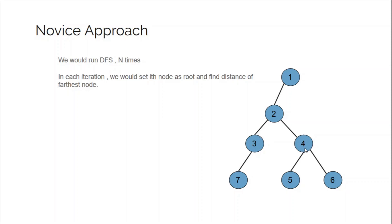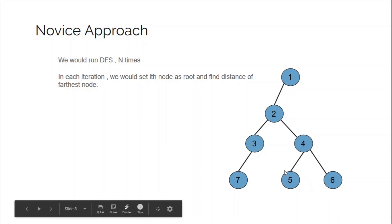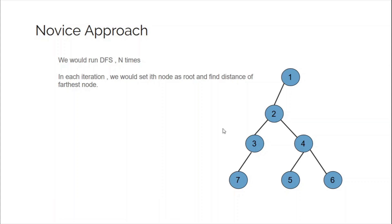As soon as we start DFS from node 5 and find the farthest node, the distance comes out to be 4, and the maximum is updated to 4. Then we run for nodes 6 and 7, and the max remains 4, which we can print. Since there are n nodes and for a tree the DFS runs in linear time — O(n) — the overall complexity of this algorithm is O(n²).